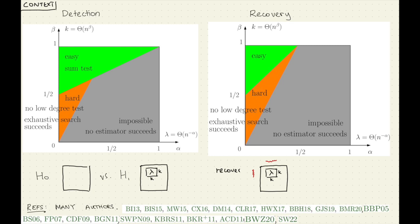These are the existing phase diagrams — a lot of work went into these two diagrams. The idea is you have some null where everything is normal zero-one, you've got a slightly raised mean. There are regions where detection is easy and the recovery problem is impossible, and also where there's evidence of hardness — both reduction-type hardness and low-degree hardness.